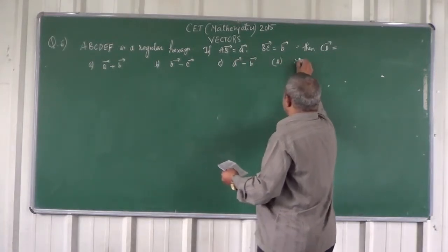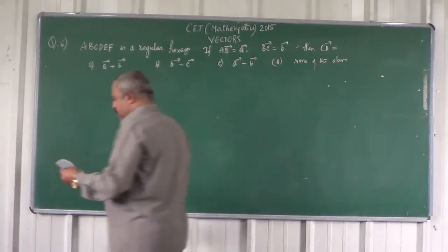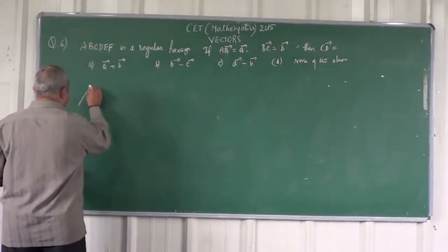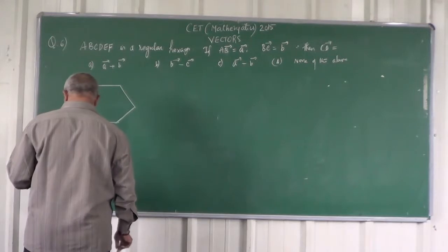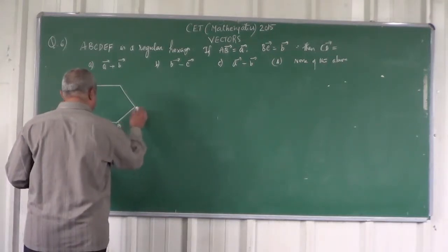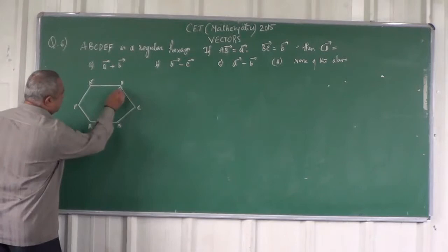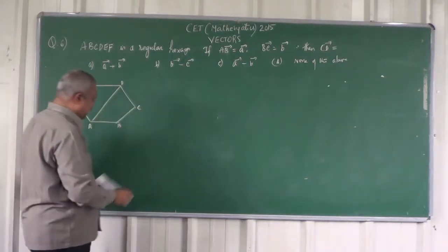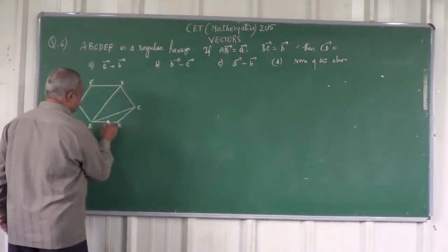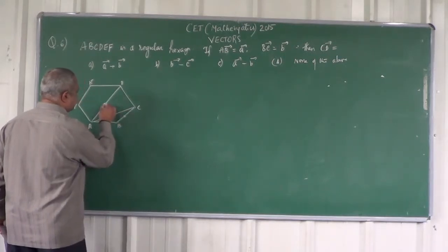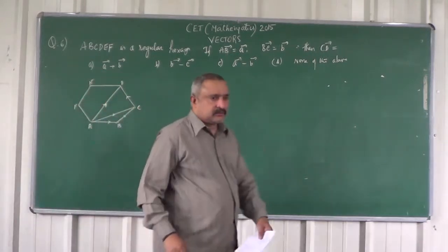So let us first draw the hexagon. The points are A, B, C, D, E, F. Join AD and also join AC.